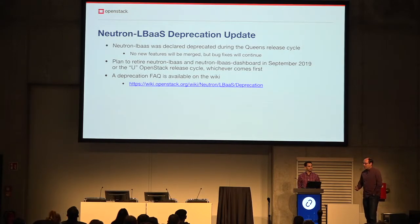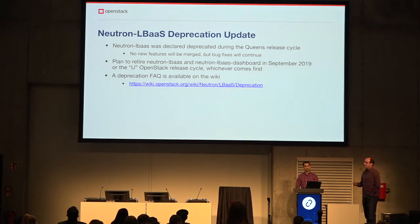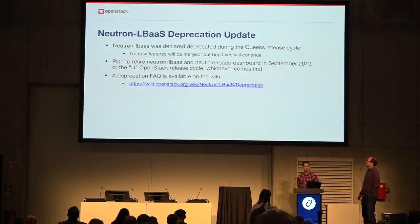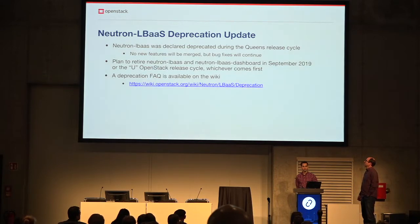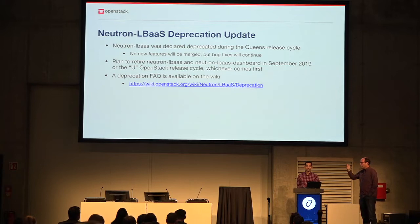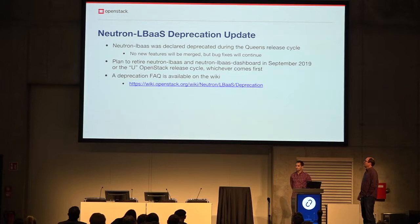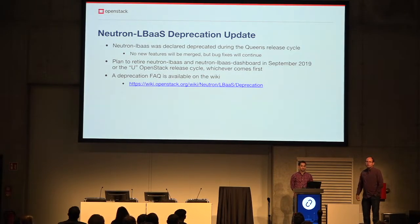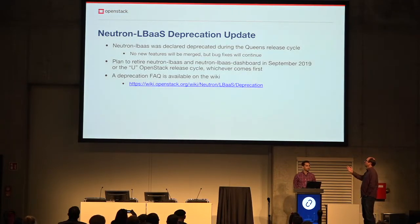We made the plan at the last PTL meeting to retire Neutron LBaaS and the Neutron LBaaS dashboard in September 2019, which is around the U OpenStack cycle, whichever comes first. We have a deprecation FAQ on the wiki so you can read up what it all means if you're running Neutron LBaaS.